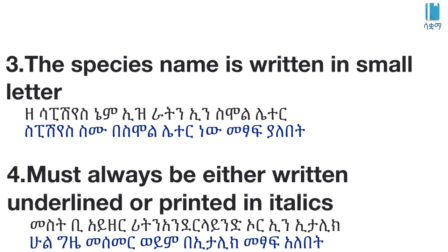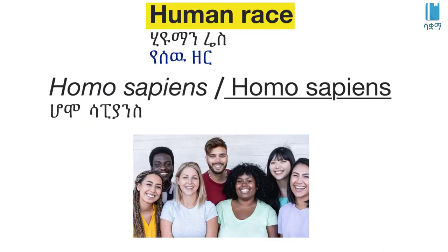Another rule: the scientific name of an organism must always be either written underlined or printed in italics. The scientific name of an organism must be written in italic style or underlined.